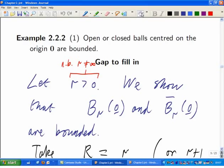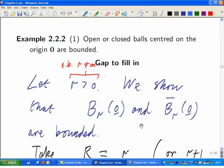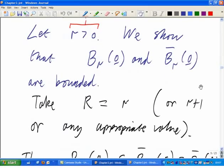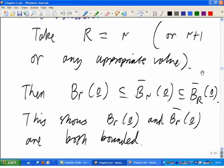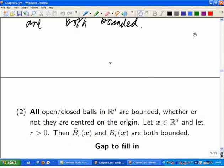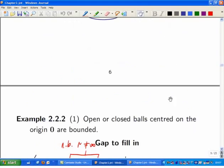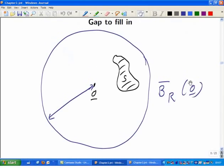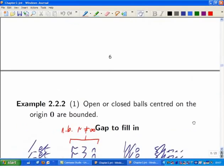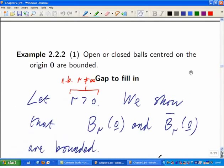Last time we started to look at open and closed balls. We're looking at sets and what it means for a set to be bounded. We had that open or closed balls centered on the origin were bounded.